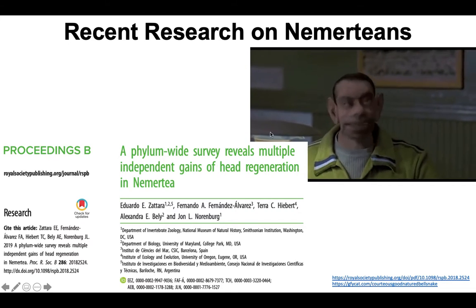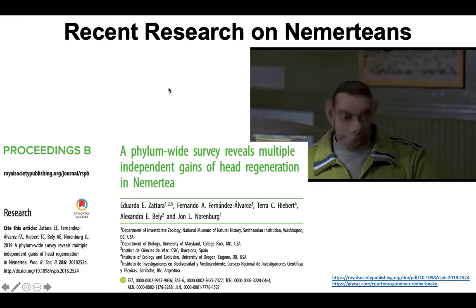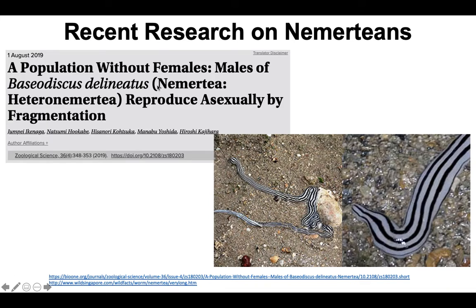If any of you have ever seen Men in Black, you'll get the GIF I included. Another really cool paper found a population of one species of nemerteans found in Southeast Asia that has no females. The way they reproduce is they just break off segments of themselves and those segments regenerate into a fully formed worm — which is really crazy and cool. So even though most reproduce sexually and are gonachoristic, there are these weirdo populations that reproduce asexually.